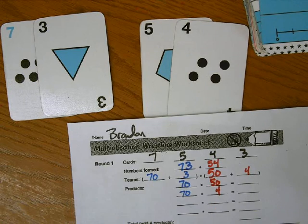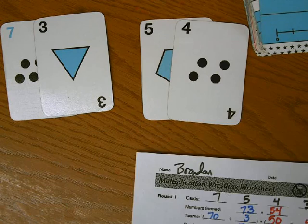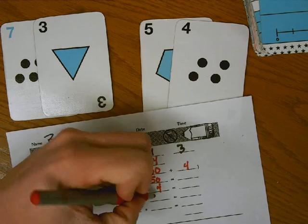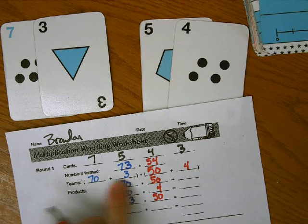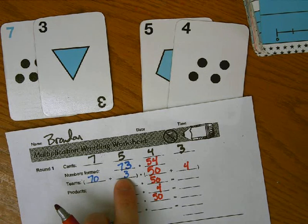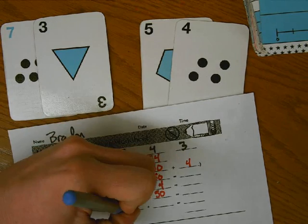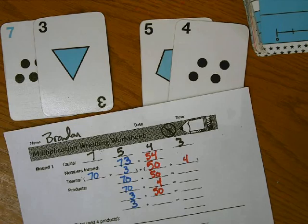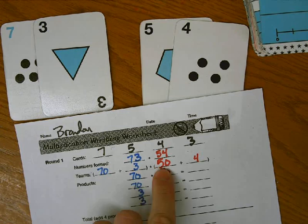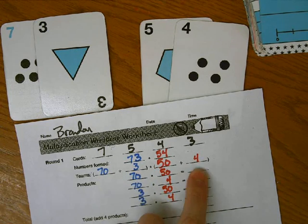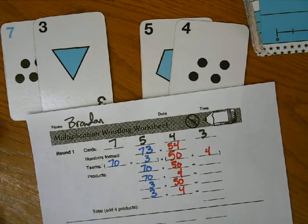So 70 has had a chance to wrestle both of these people. So now the three is going to wrestle the 50. And so the three has wrestled the 50. The three is not going to wrestle its own teammate. So the only one left is the three and the four. So now they are going to wrestle three times four. Okay, so you notice that 70 has wrestled each person on the red team, and the three has wrestled each person on the red team as well.